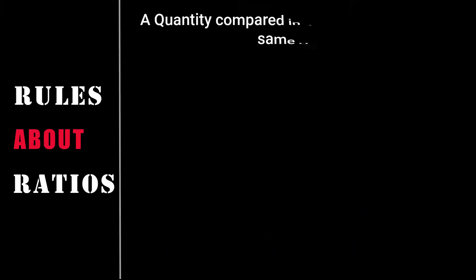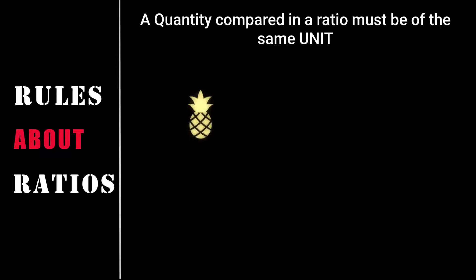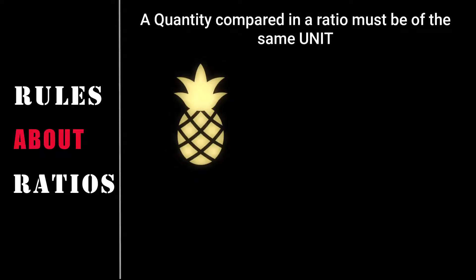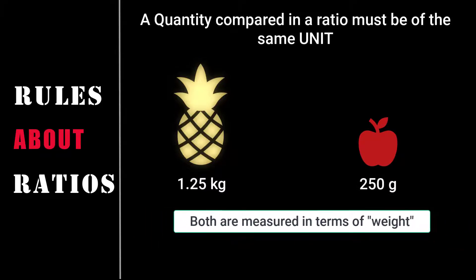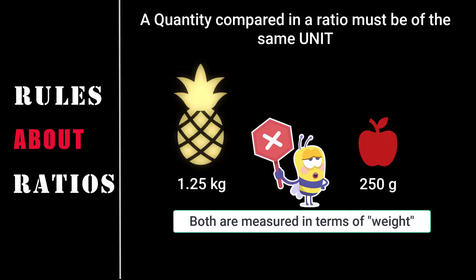Moving on to rule number 3: Quantity compared in the ratio must be of the same unit. The last rule was that it has to be of the same kind, and this rule states that quantity compared in the ratio must be of the same unit. Now there is a pineapple weighing 1.25 kilogram and an apple weighing 250 grams. Here both belong to the same quantity, but do they possess the same units? No. The weight of pineapple is given in kilogram and the weight of apple is given in grams.